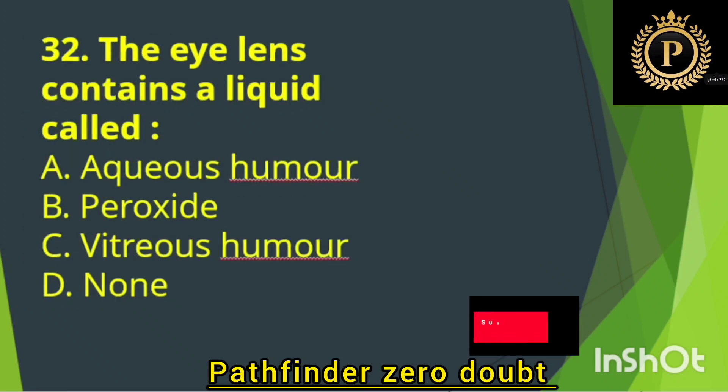The eye lens contains a liquid called — Option A: Aqueous humor.